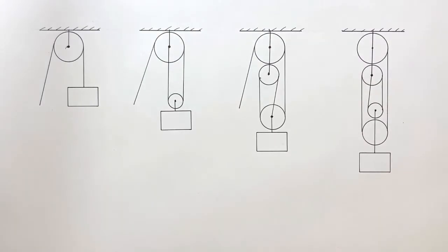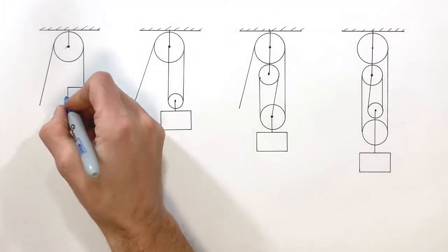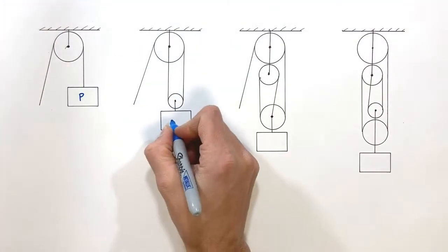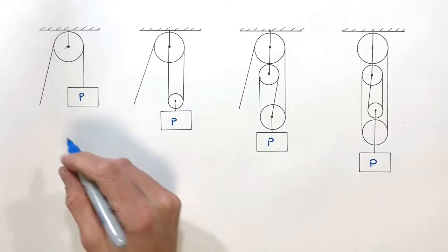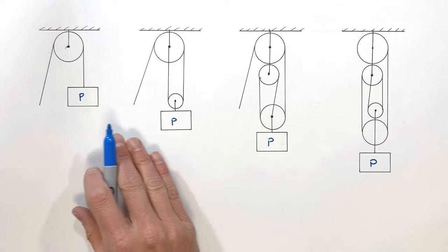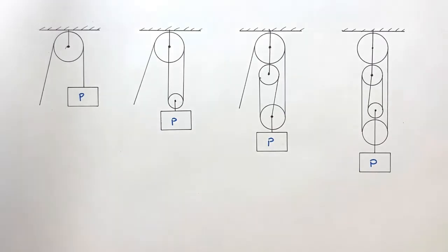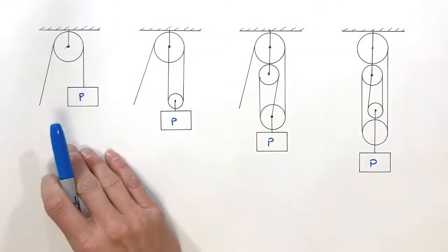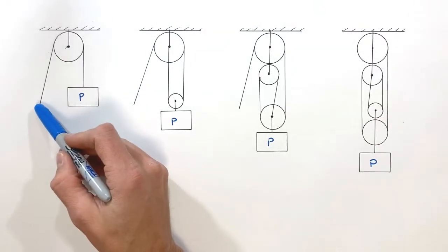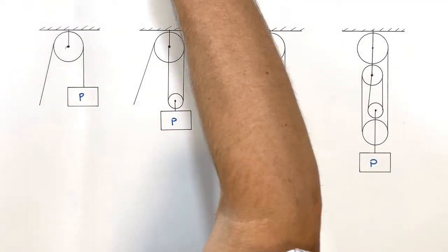Today we're talking about pulleys. We have four different arrangements of pulleys, and what we're going to do with each of these is put some load P on one end. We're going to figure out the IMA and AMA of each of these pulleys, which will tell us how much force it takes to lift the load and how far we'll have to pull the other end to lift the load a certain distance.